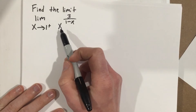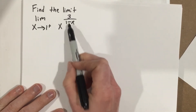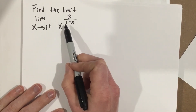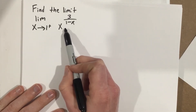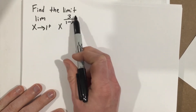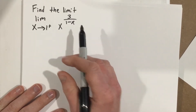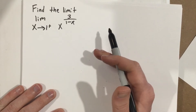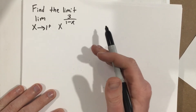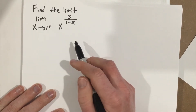What we want to do is get this into a fraction form. Right now it's in a form where you have some variable to an exponent, and we want to get it into a fraction. In order to do this, we're going to have to use some natural logarithms.